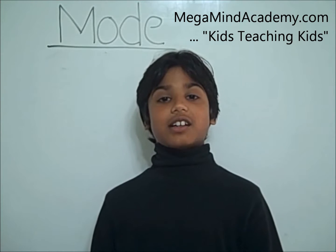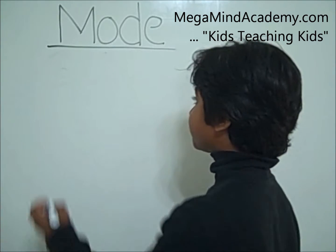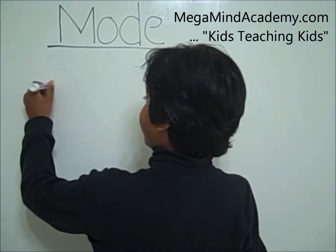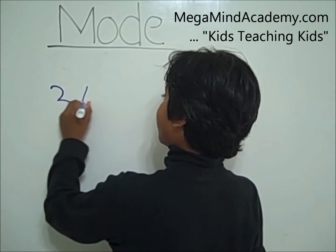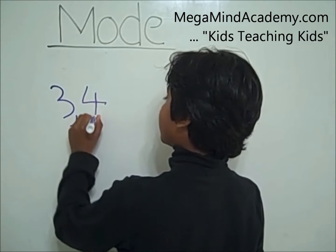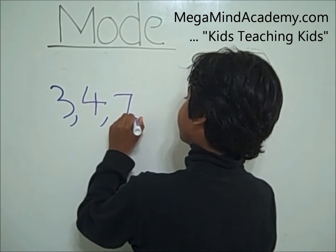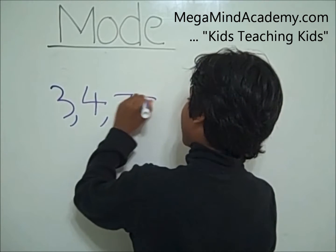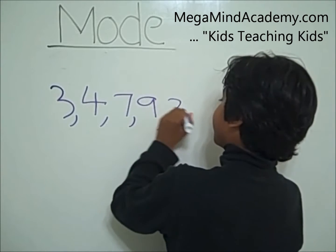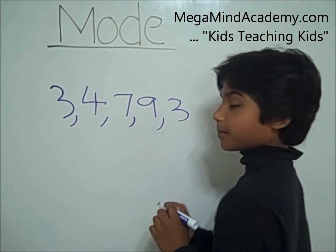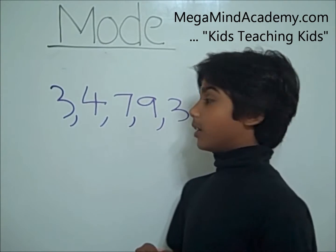Let's say our given set of data is 3, 4, 7, 9, and 3. How do we find the mode?